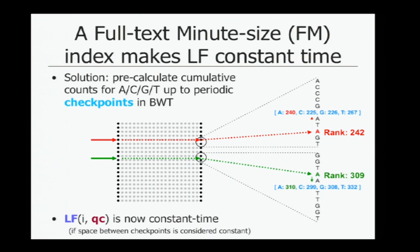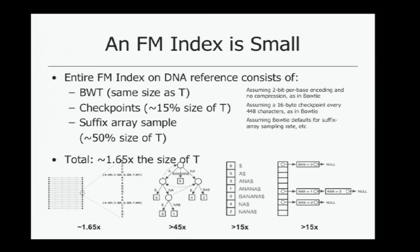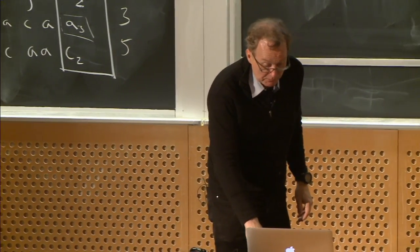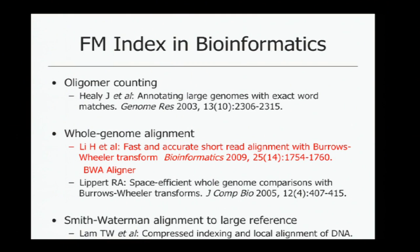The FM index is small — not even twice the size of the genome — compared to suffix trees, suffix arrays, or hash structures for seeds. It's a very compact and efficient index, which is why it's widely used. One remaining limitation is mismatches.